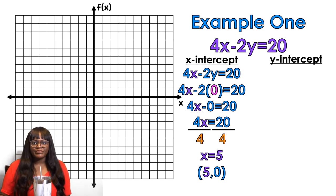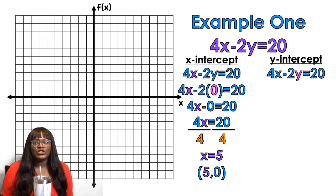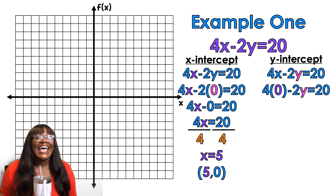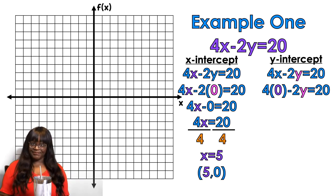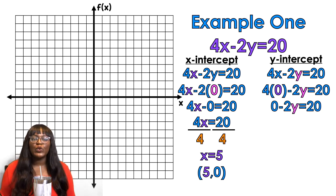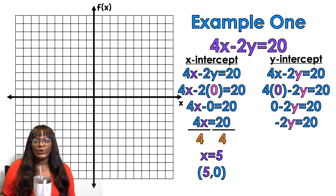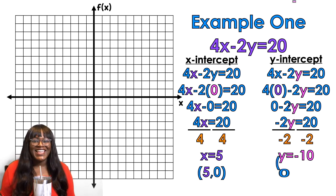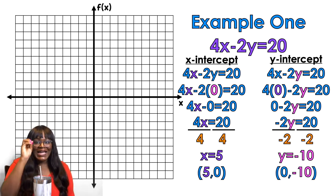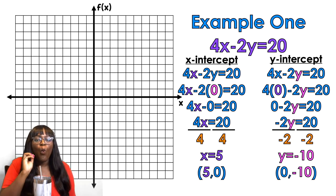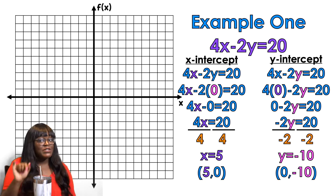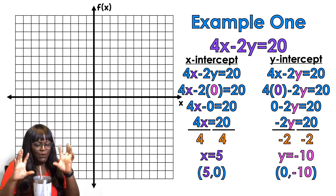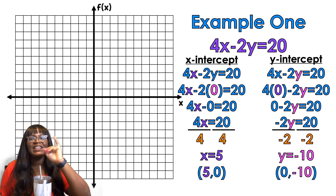For the y-intercept: 4x minus 2y equals 20. We plug in 0 for x. 4 times 0 is 0, so negative 2y equals 20. Divide by negative 2 — y equals negative 10. So (0, negative 10) is my y-intercept. Notice the difference: an x-intercept is (number, 0) and a y-intercept is (0, number). I always stress that because you should know how to recognize them.